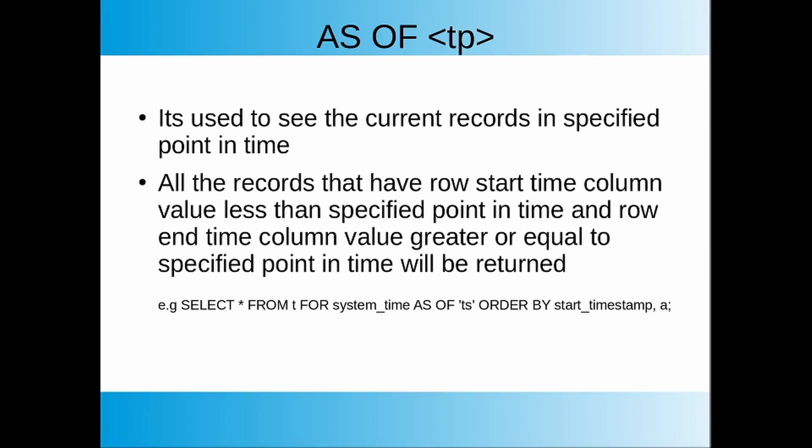The first form of temporal query is the FOR SYSTEM_TIME AS OF clause. It is used when there is a need to see the table at a specified point in time in the past. It returns all records current at the specified point in time — meaning records where the row_start column value is less than the specified point in time, and the row_end column value is greater than or equal to the specified point in time. The syntax is specified on the screen.